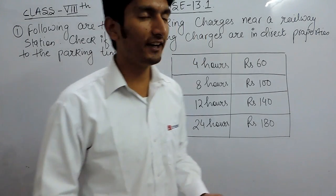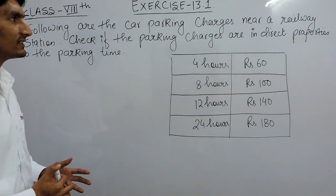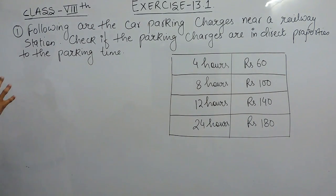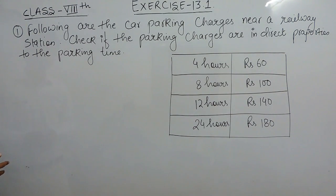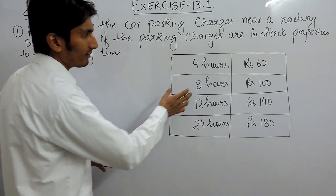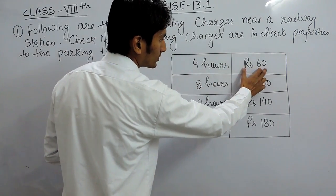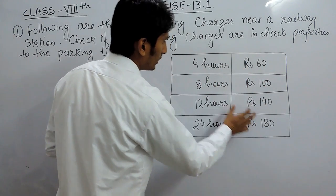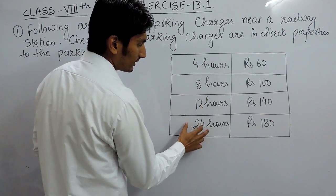Hello everyone. In this video we are starting exercise 13.1 and solving the first question. The question says: following are the car parking charges near a railway station. You have to check if the parking charges are in direct proportion to the parking time — meaning whether the cost is increasing in proportion to the time.